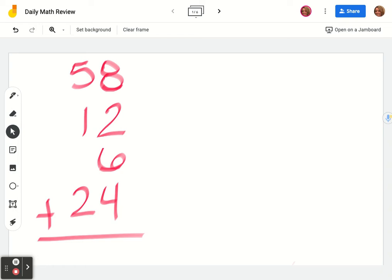This is adding four two-digit numbers, and so the strategy we're going to do today is place value or expanded form.